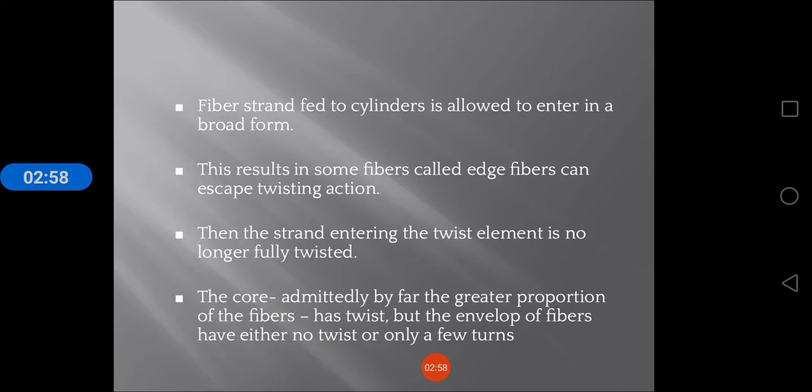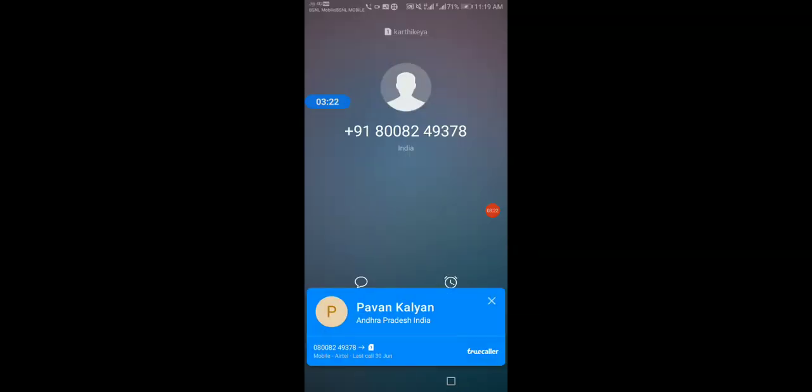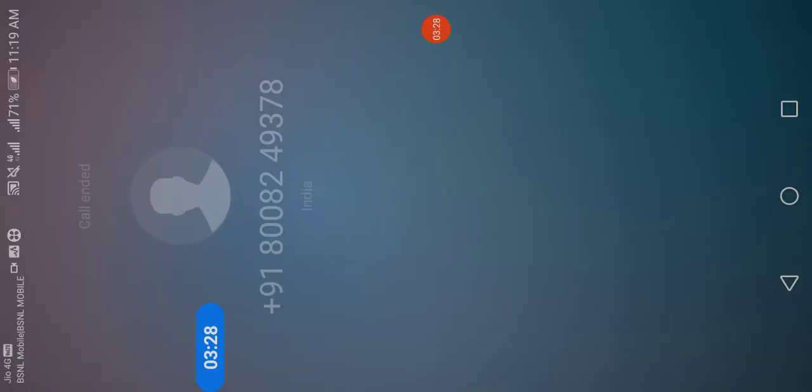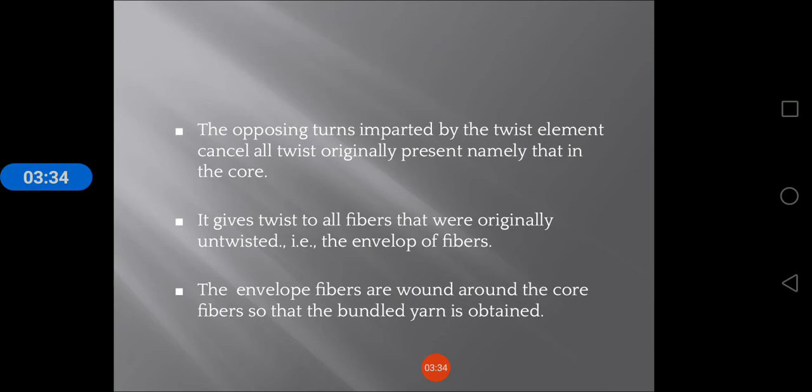The core - admittedly by far the greater proportion of the fibers - has twist, but the envelope of fibers have either no twist or only a few turns. The opposing turns imparted by the twist element cancel all twists originally present, namely that in the core. It adds twist to all fibers that were originally untwisted - the envelope of fibers.